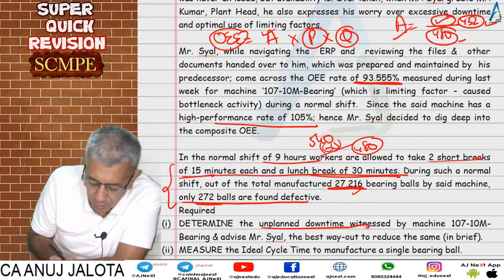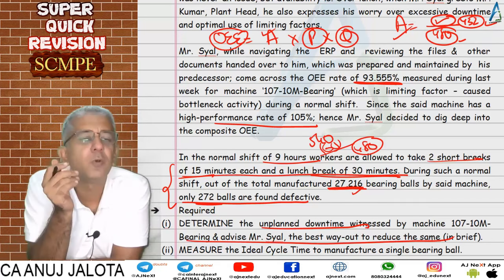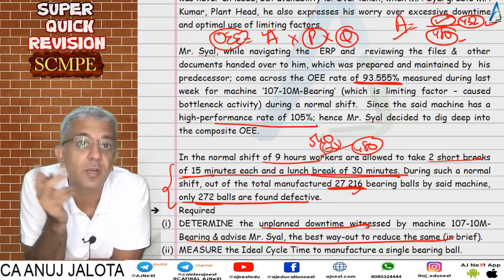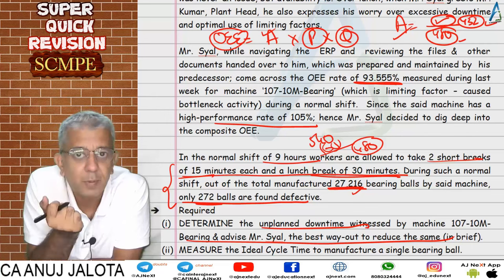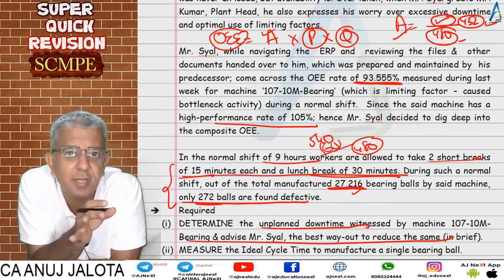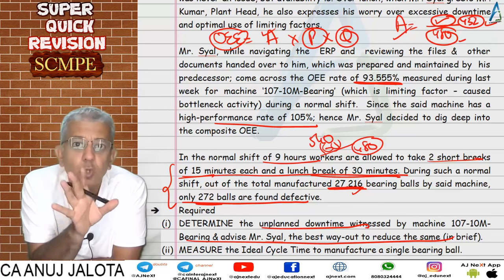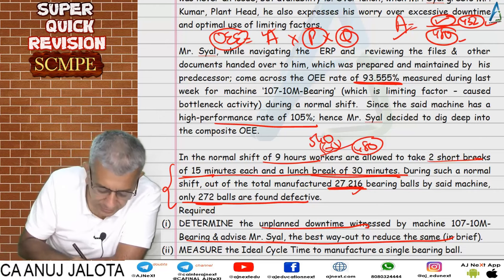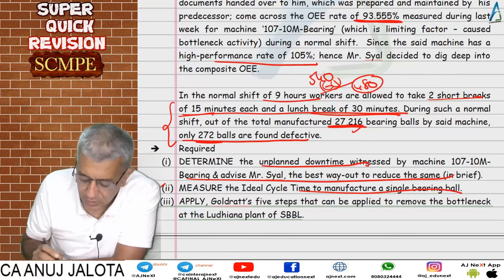To reduce unplanned downtime, introduce preventive maintenance — maintain machines so there are no unscheduled stops. This was covered in the TPM chapter. For part two, to find the ideal cycle time to manufacture a single ball bearing, we use the performance ratio: standard minutes for actual output divided by actual time taken equals 105%. Since actual time was 432 minutes, we find total standard minutes as the balancing figure.